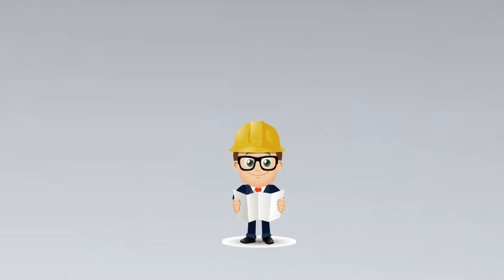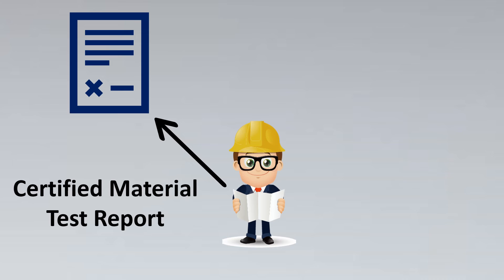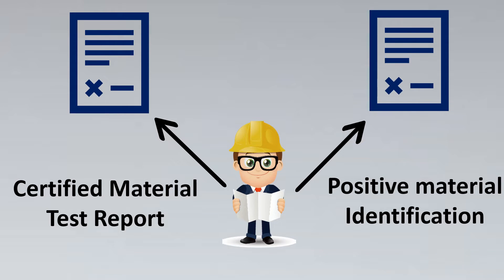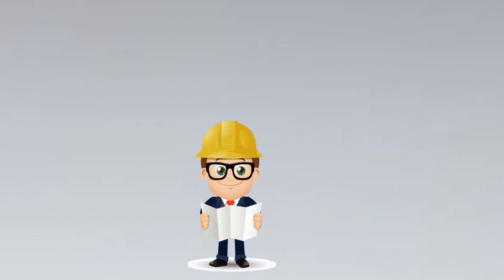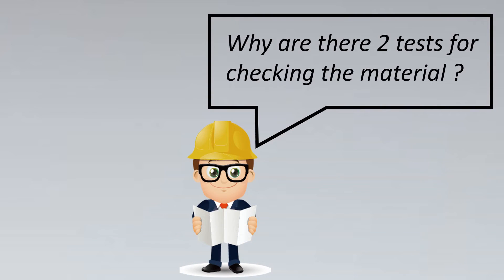I was working on an instrument data sheet when I came across two interesting terms. The first was CMTR, which stands for Certified Material Test Report, and the other was PMI, which stands for Positive Material Identification. These two terms were very new to me, and I was wondering what they are — especially why there are two tests for checking the material, and what the difference is between them and when to use what.